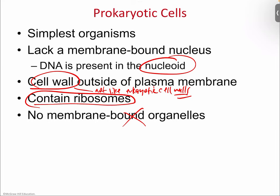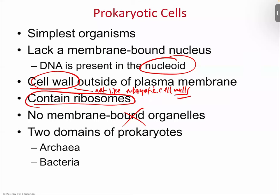Prokaryotic cells split into two different categories. Taxonomy used to split things into two domains — prokaryotes and eukaryotes — but now it's three domains because we discovered that some prokaryotes are a little different. There are two prokaryotic domains: the archaea group, and traditional bacteria like E. coli and Salmonella. Archaea are different because you only find them in extreme environments like deep-sea thermal vents — they tend to be extremophiles.